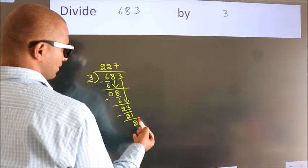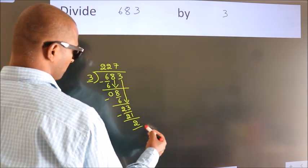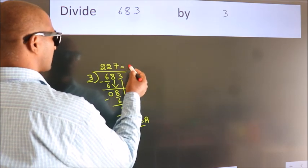After this, no more numbers to bring it down, so we stop here. This is our remainder, this is our quotient.